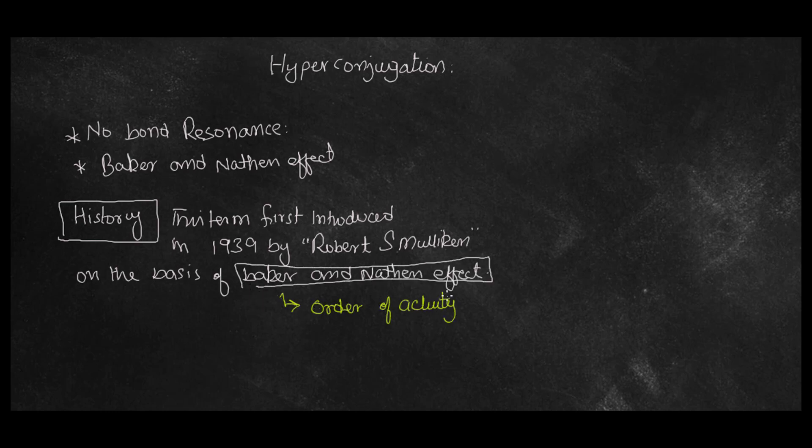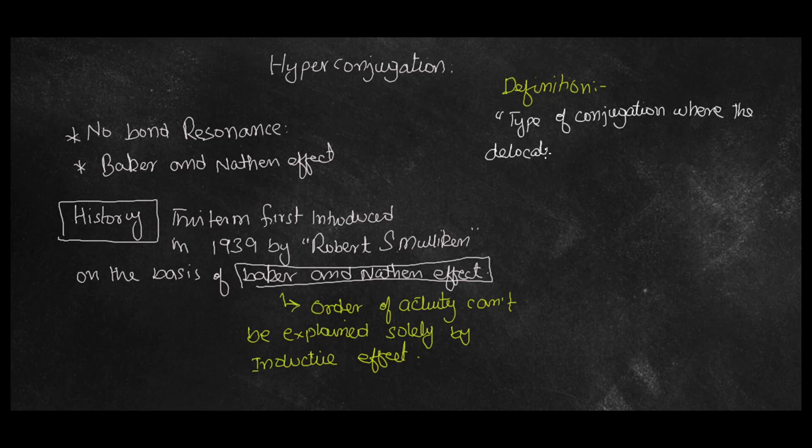on the basis of the Baker and Nathan effect. Now let me explain what is Baker and Nathan effect. This is the order of activity that cannot be explained solely by inductive effect. As we previously discussed inductive effect, chemistry is not about only inductive effect.